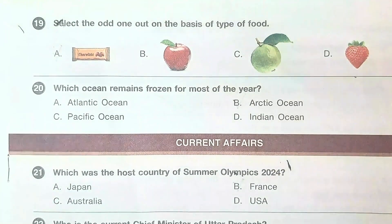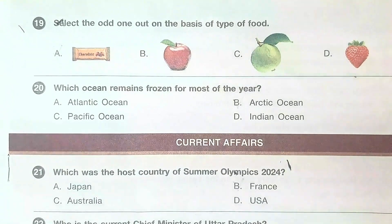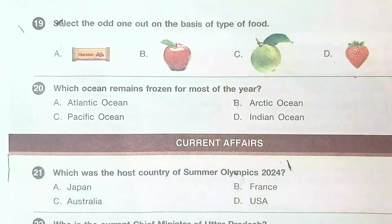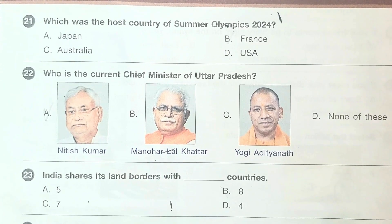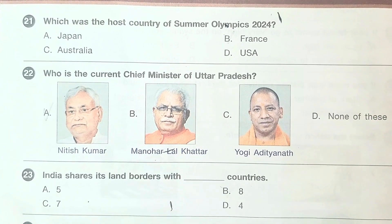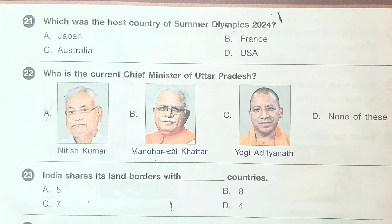Question number 20: which ocean remains frozen for most of the year? The answer is option B, Arctic Ocean. Question 21: which was the host country of the Summer Olympics 2024? The answer is option B, France. Question number 22: who is the current Chief Minister of Uttar Pradesh? The answer is option C, Yogi Adityanath.